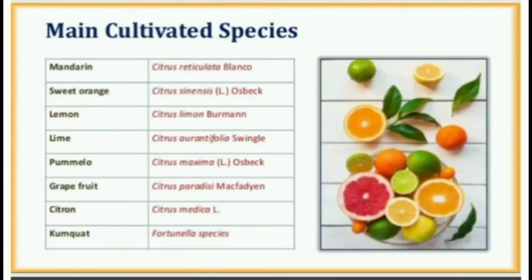Main cultivated species: Mandarin — Citrus reticulata; Sweet Orange — Citrus sinensis Osbeck; Lemon — Citrus limon Burman; Lime — Citrus aurantifolia Swingle; Pumelo — Citrus maxima L. Osbeck; Grapefruit — Citrus paradisi Macfadyen; Citron — Citrus medica L.; Kumquat — Fortunella species.